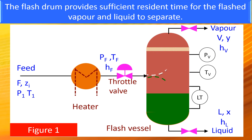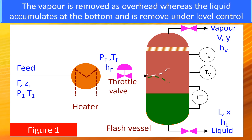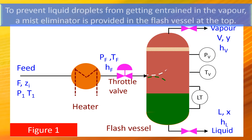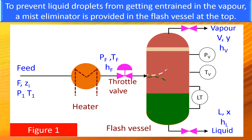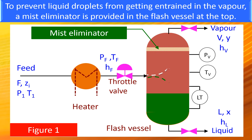The Flash drum provides sufficient residence time for the flash vapor and liquid to separate. The vapor is removed as overhead whereas the liquid accumulates at the bottom and is removed under level control. To prevent liquid droplets from getting entrained in the vapor, a mist eliminator is provided in the Flash vessel at the top.